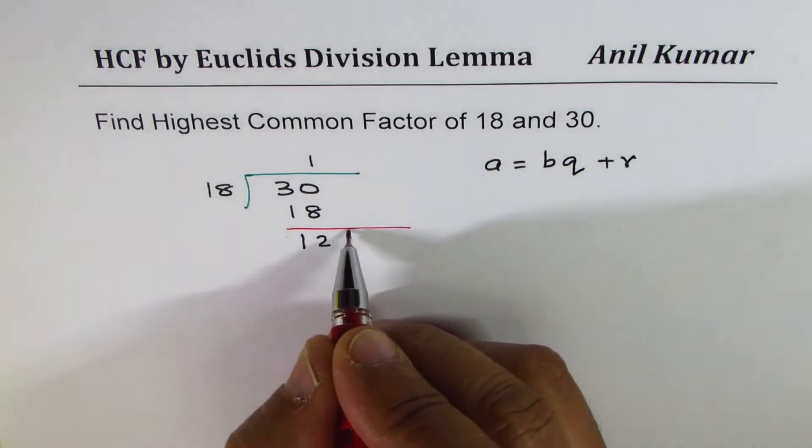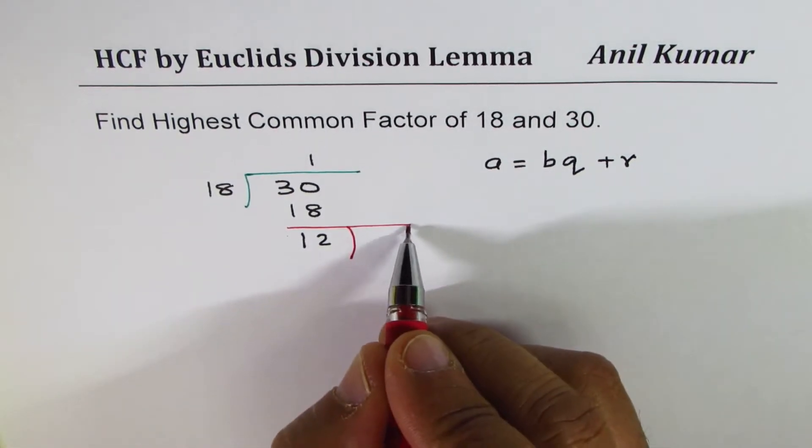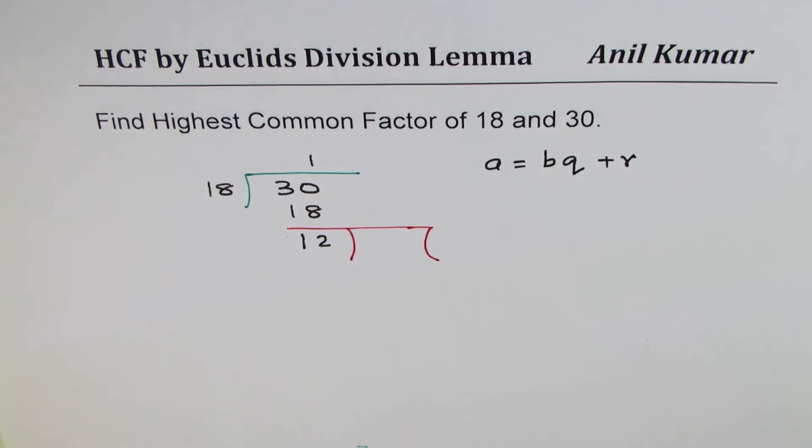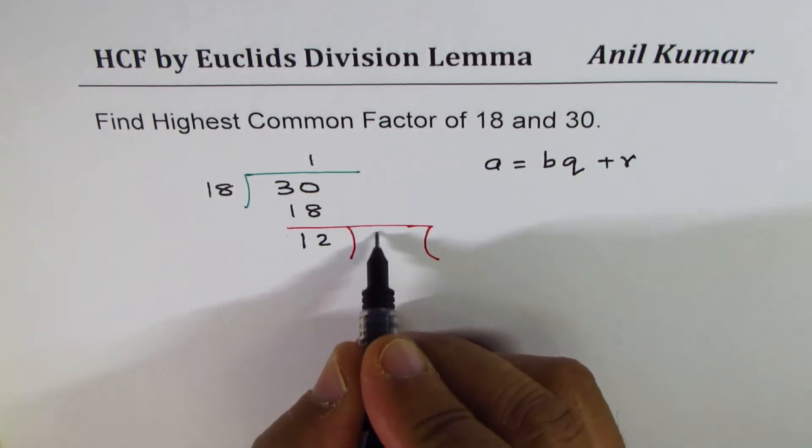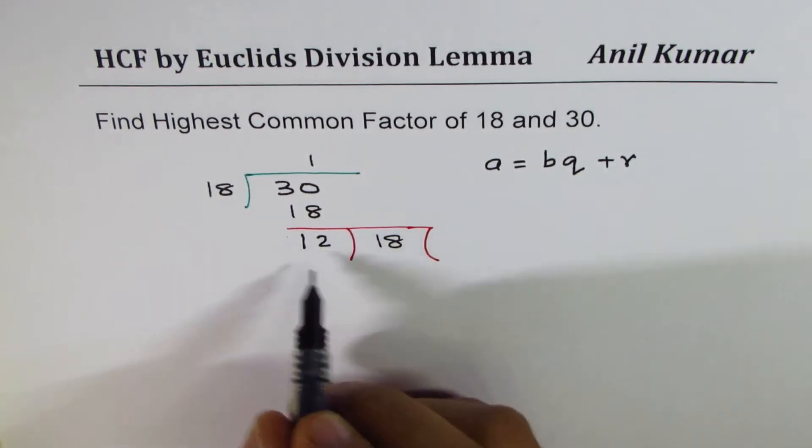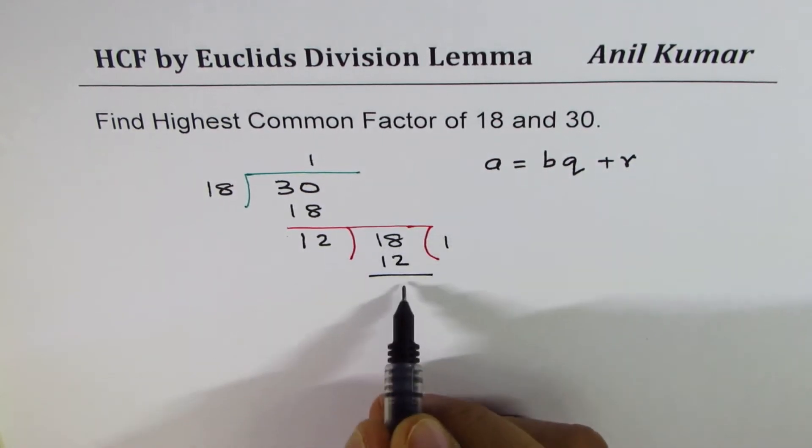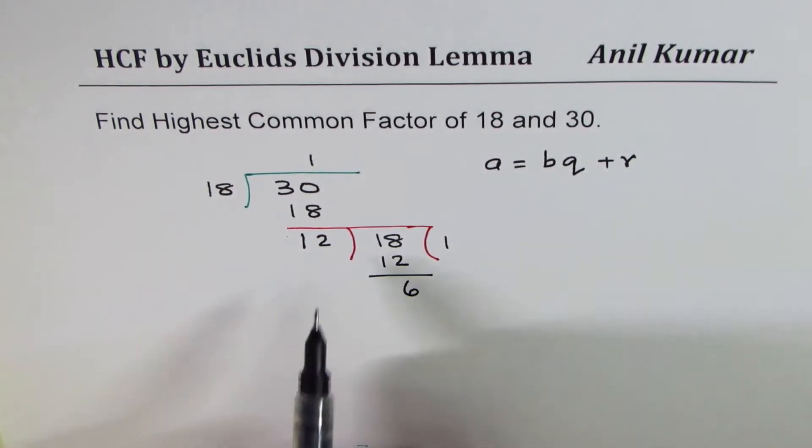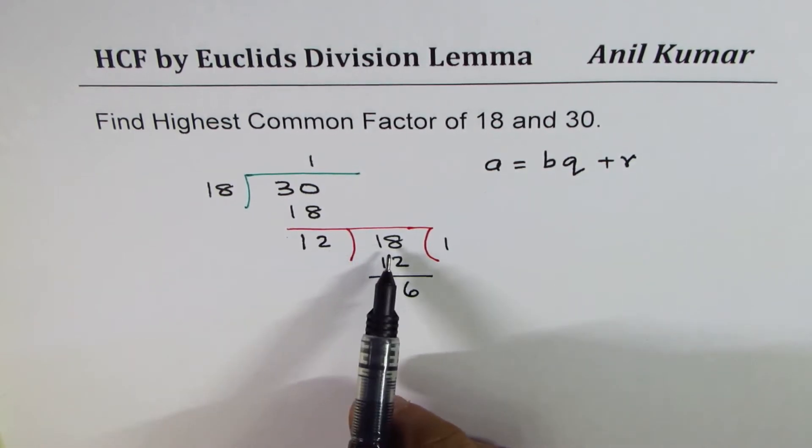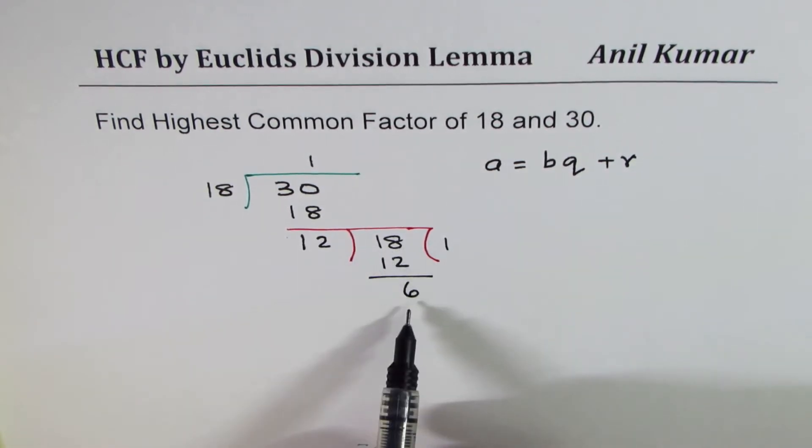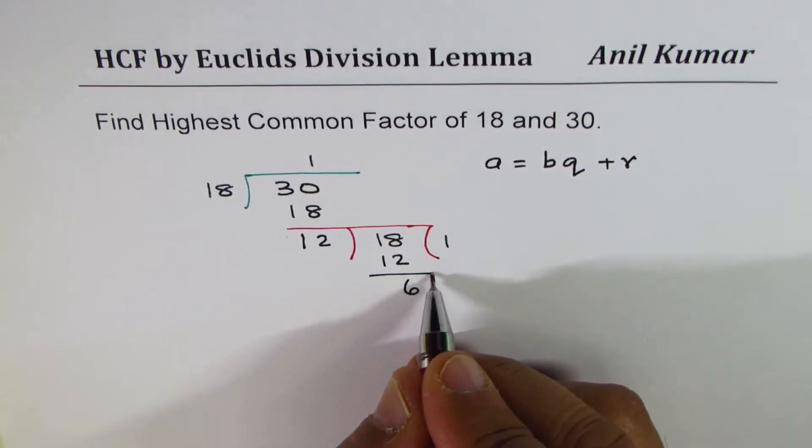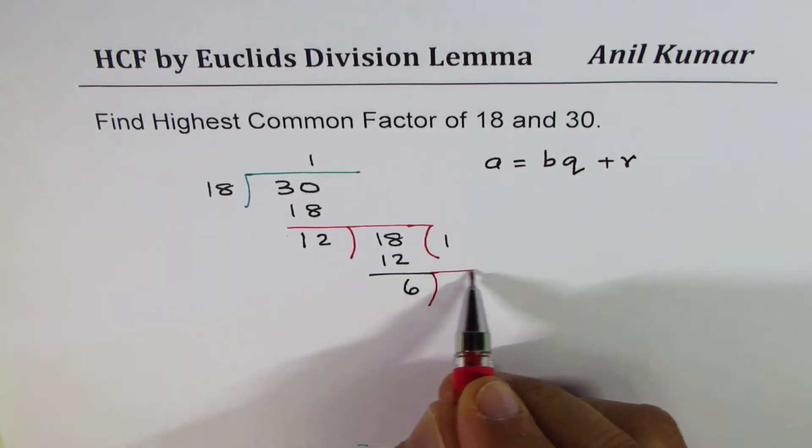We'll divide 18 by 12. Now, 12 goes one time, which is 12. We get a remainder of 6. 12 is also not a factor of 18, since we got a remainder. So we repeat this process of division till the remainder is zero.